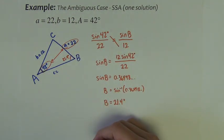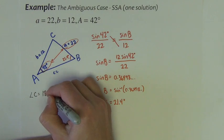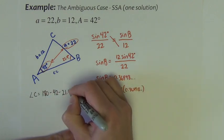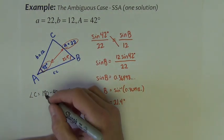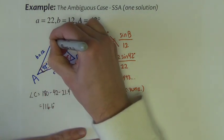Well once we have that much information, now we can find angle C. Angle C is 180 minus 42 minus 21.4 degrees. So angle C is 116.6 degrees.